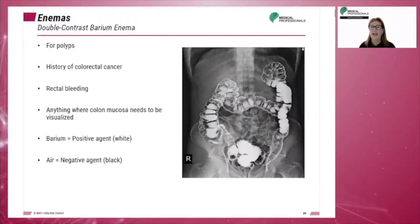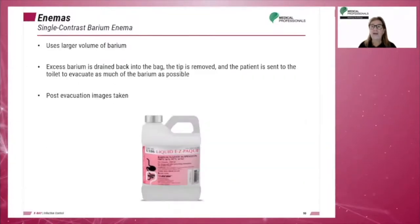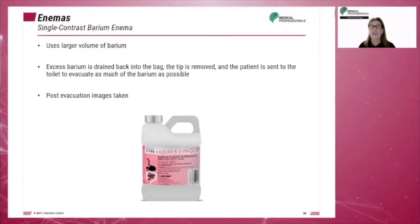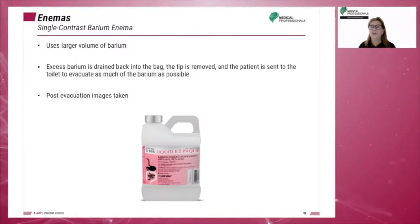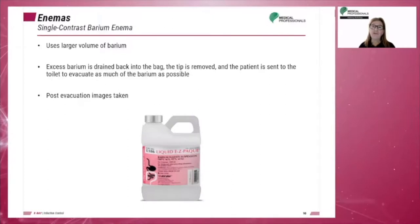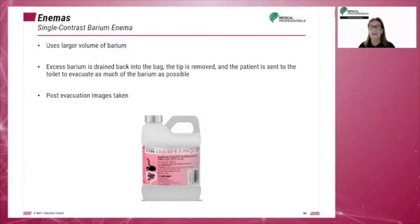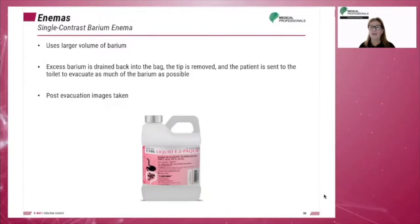Fluoroscopy imaging allows visualization of the anatomy. Single-contrast barium enema uses a larger volume of barium. After fluoroscopy imaging, the excess barium is drained back into the bag, the tip is removed, and the patient is sent to the toilet to evacuate as much barium as possible. Post-evacuation images can then be taken. The single-contrast study can be used to evaluate fistulas, acute appendicitis, diverticulitis, volvulus, colon anatomy, and patients who are extremely debilitated.